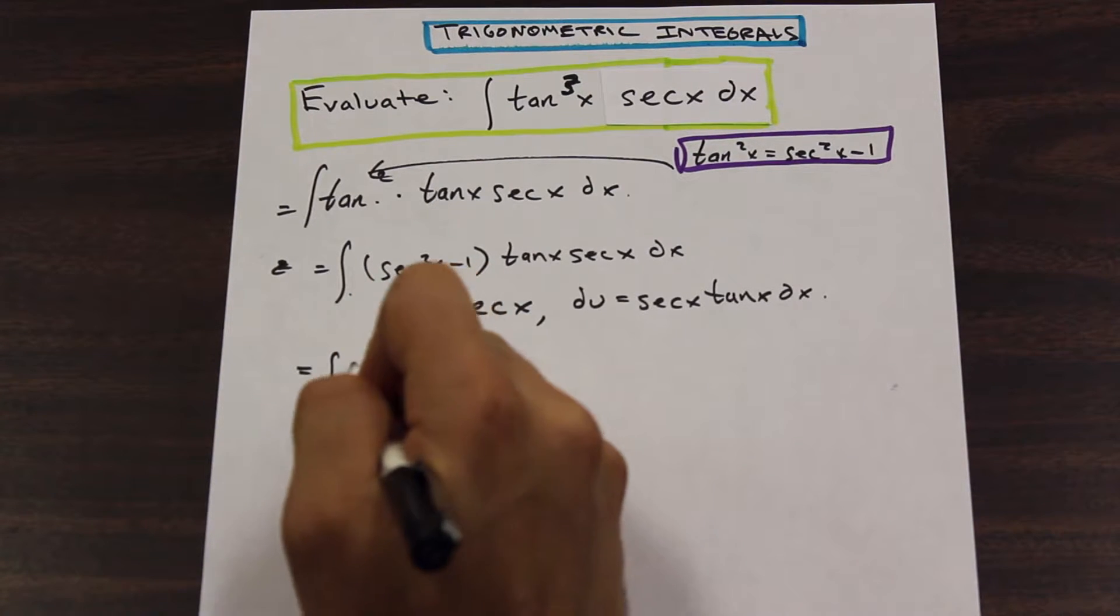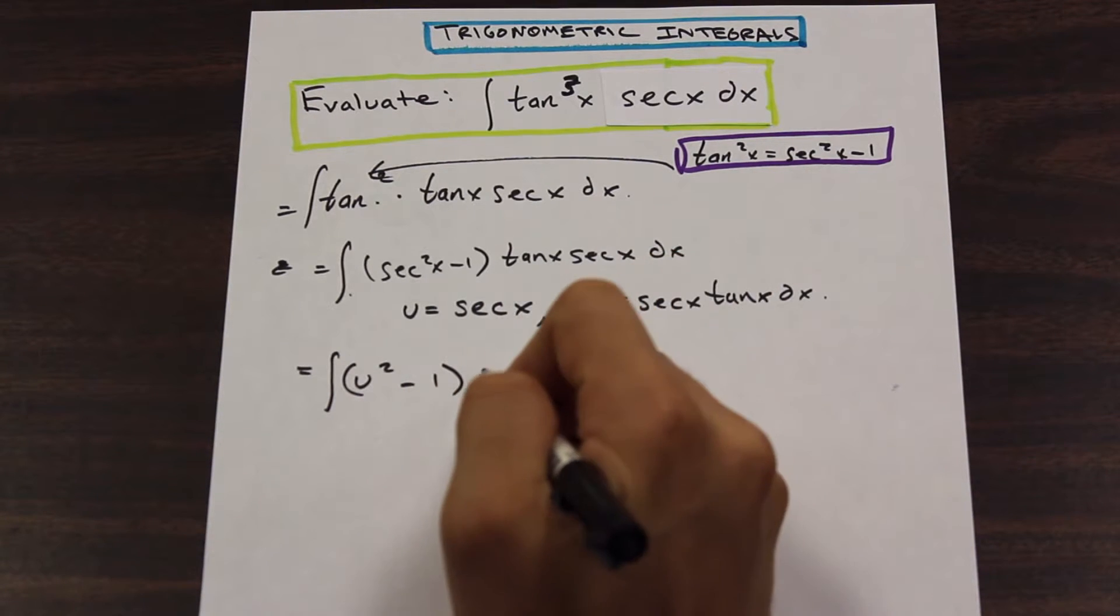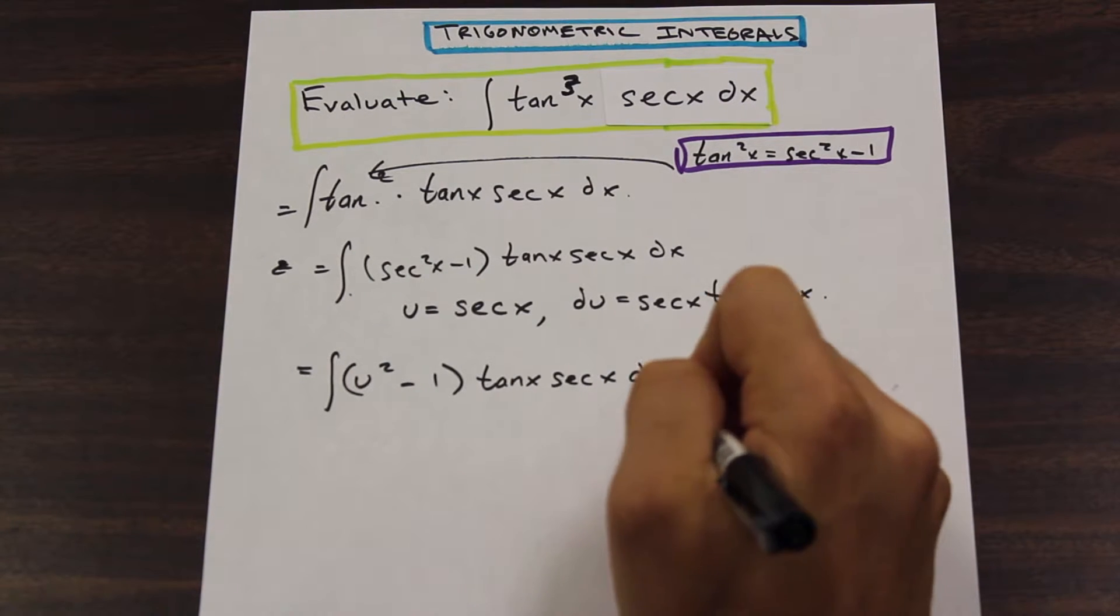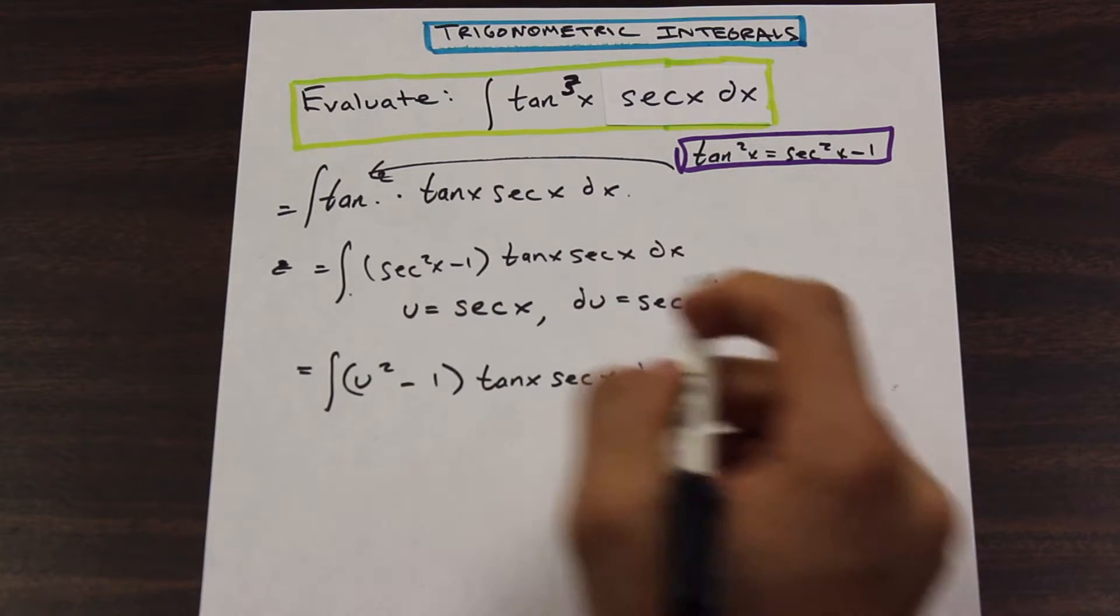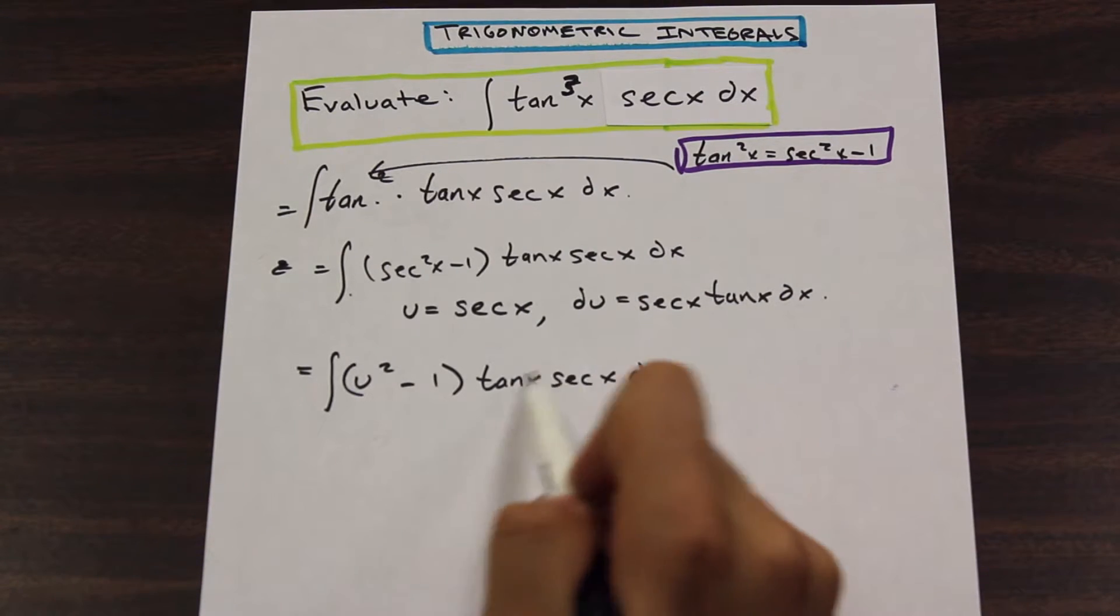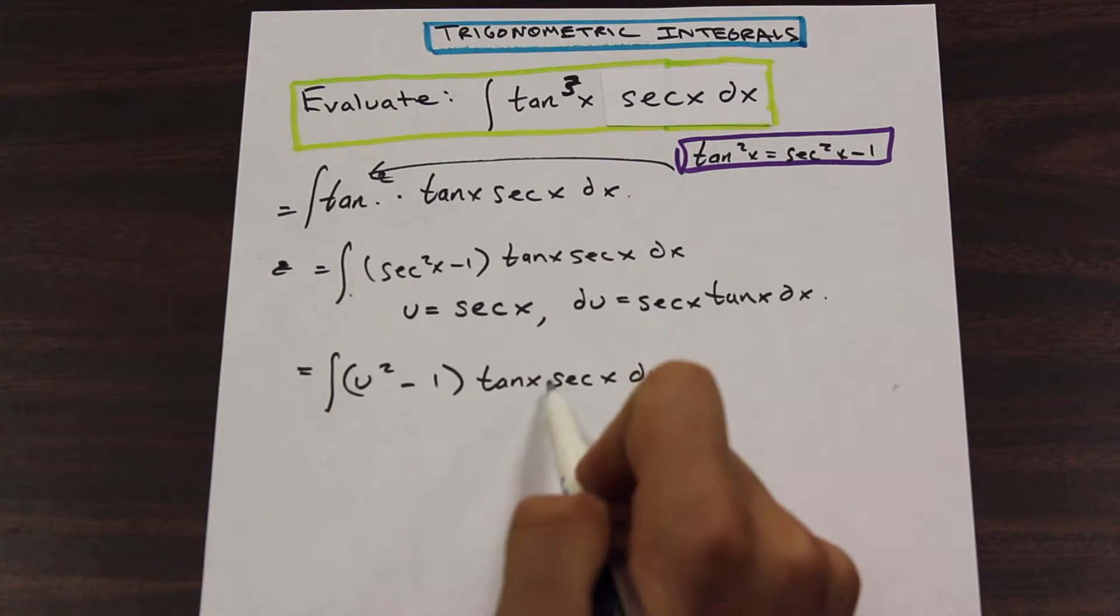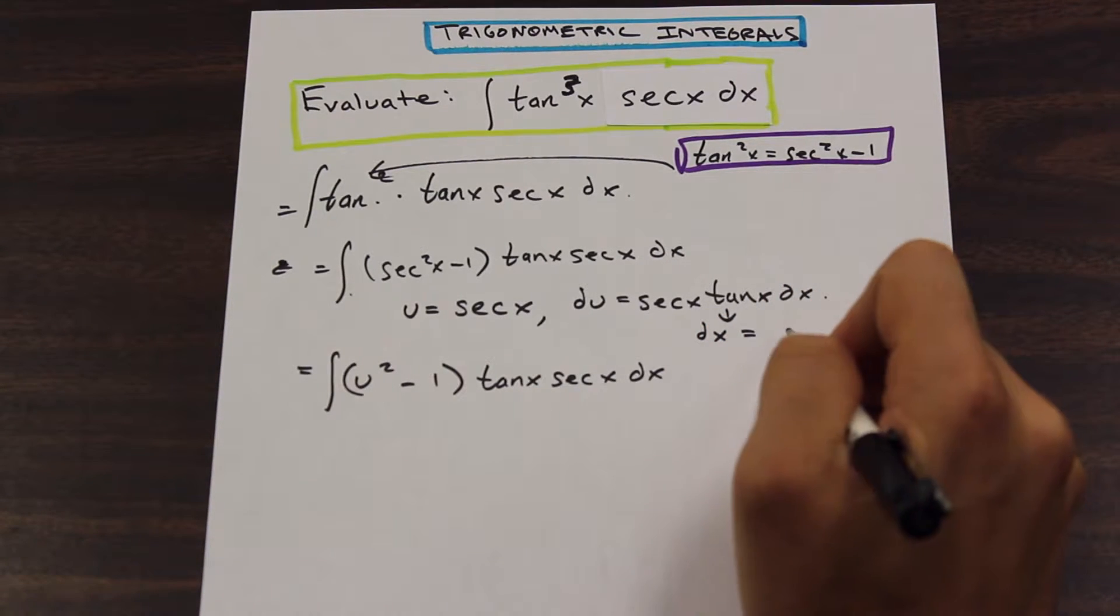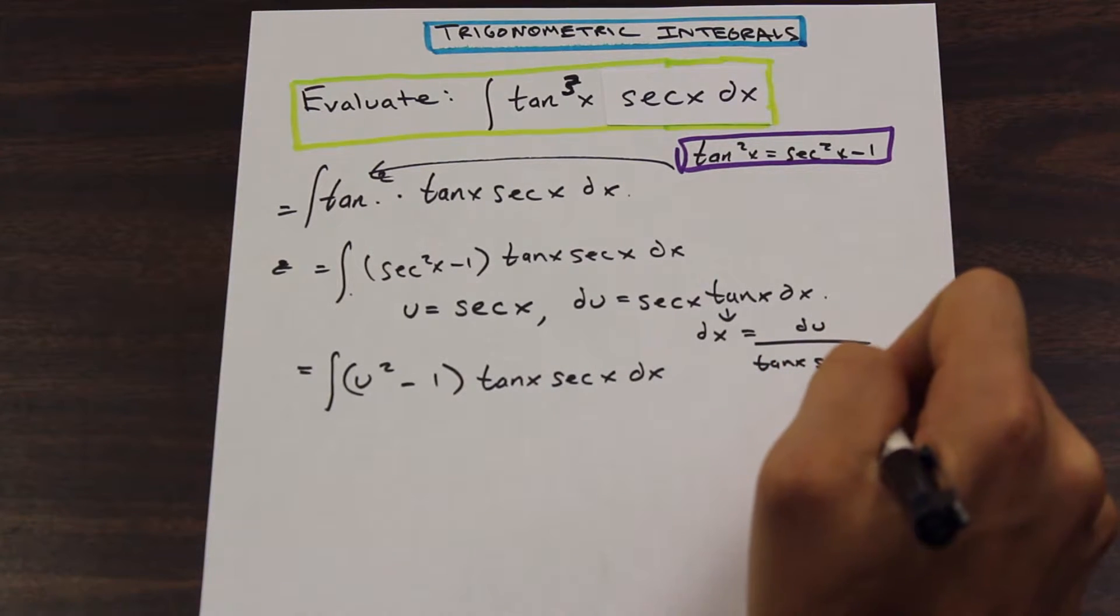So we are going to be left with u squared minus 1 tan x secant x dx. So how do we proceed here? Well, as you can see, we have a dx term here. And if we pay attention, I didn't write them in the same order. However, if we substitute for dx here, we're going to see that these two terms cancel. So rearranging here, we have dx is equal to du over tan x secant x.